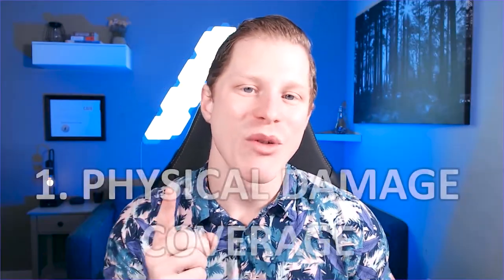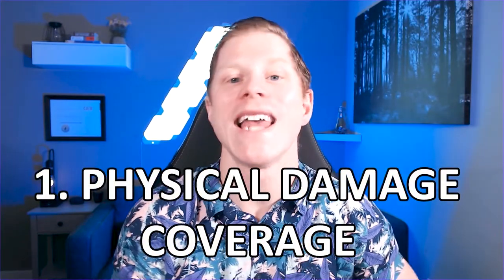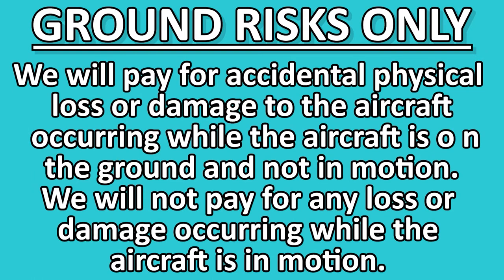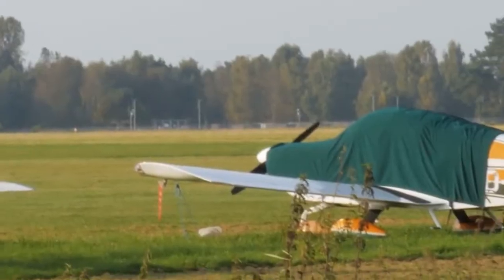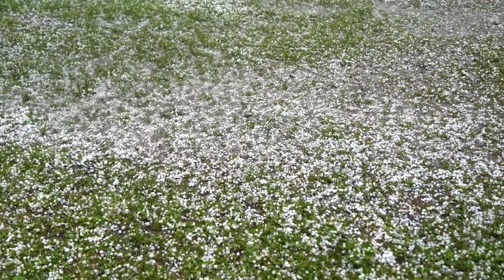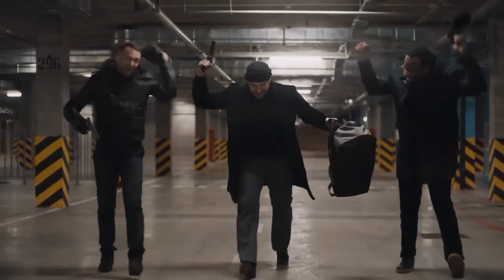This policy will help protect you in two areas. Number one: physical damage coverage for your aircraft while it is on the ground and the engine is off. As one insurance company defines it — ground risks only: we will pay for accidental physical loss or damage to the aircraft occurring while the aircraft is on the ground and not in motion; we will not pay for any loss or damage occurring while the aircraft is in motion. This is great coverage especially if a hangar burns down, or a hailstorm or windstorm damages your aircraft while it's tied down. This policy could also protect your aircraft against vandalism, theft, etc.